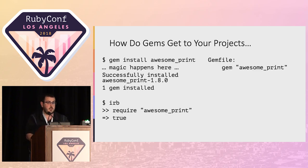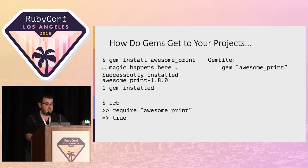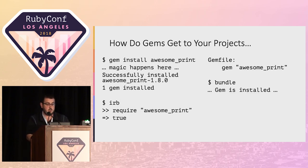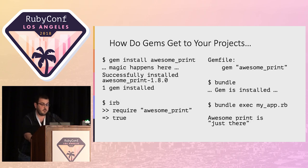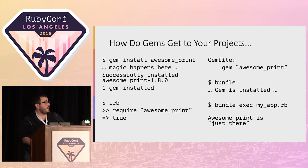Alternatively, you can have a Gemfile. Pop in a gem, the name of the gem you want, run bundle, and the gem is also magically installed. Run bundle exec against your app, and awesome_print is just there.